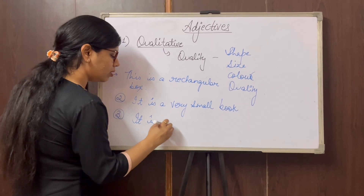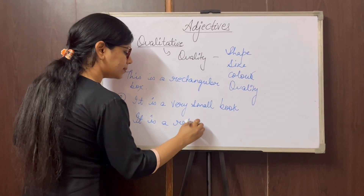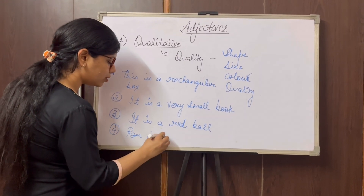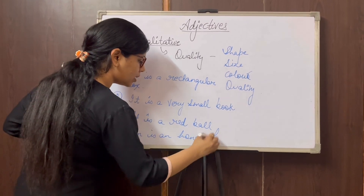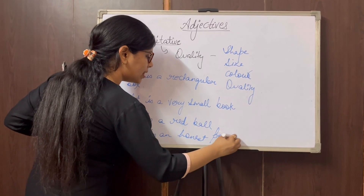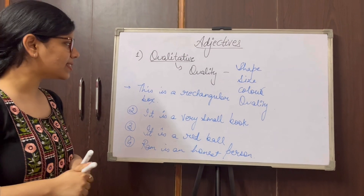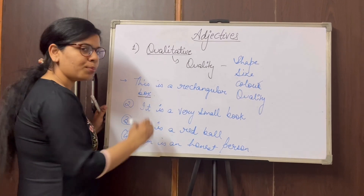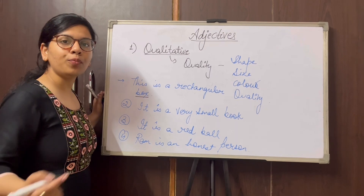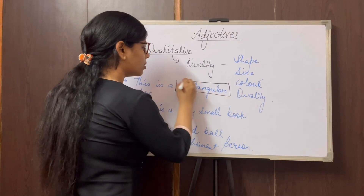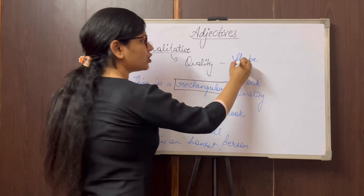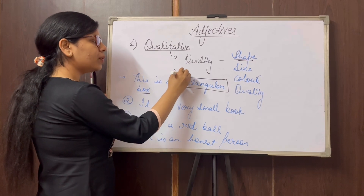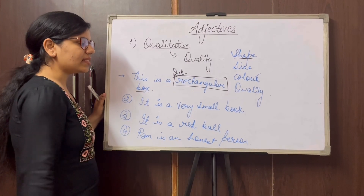Third example: it is a red ball. Fourth: Ram is an honest person. Now let's figure out the adjectives in all these sentences. In 'this is a rectangular box,' the noun is 'box,' and what kind of box is it? Rectangular — so 'rectangular' becomes the adjective telling you the shape, making it an example of qualitative adjective.